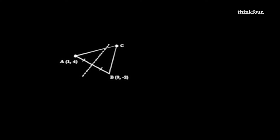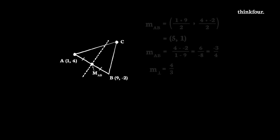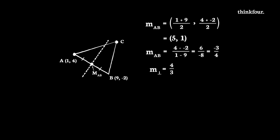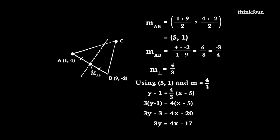We will find the equation of the perpendicular bisector of side AB in this triangle. It doesn't go through any of the vertices of the triangle, but it does go through the midpoint of AB, which is 5, 1. Its gradient is perpendicular to line AB, which has gradient negative 3 quarters, so the perpendicular gradient is 4 thirds. Now we use this perpendicular gradient and the midpoint 5, 1 to find the equation of the line, giving 3Y equals 4X minus 17.